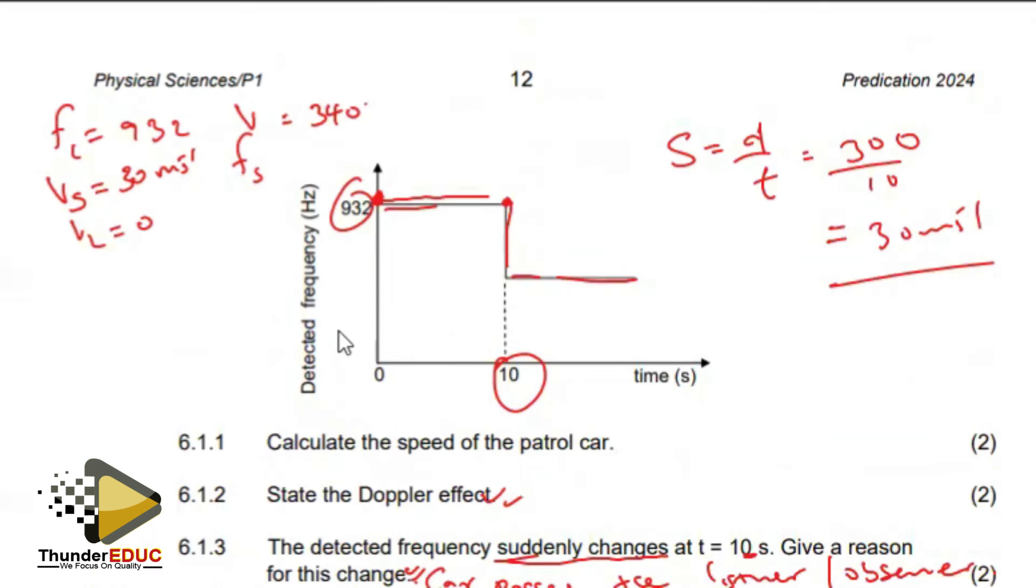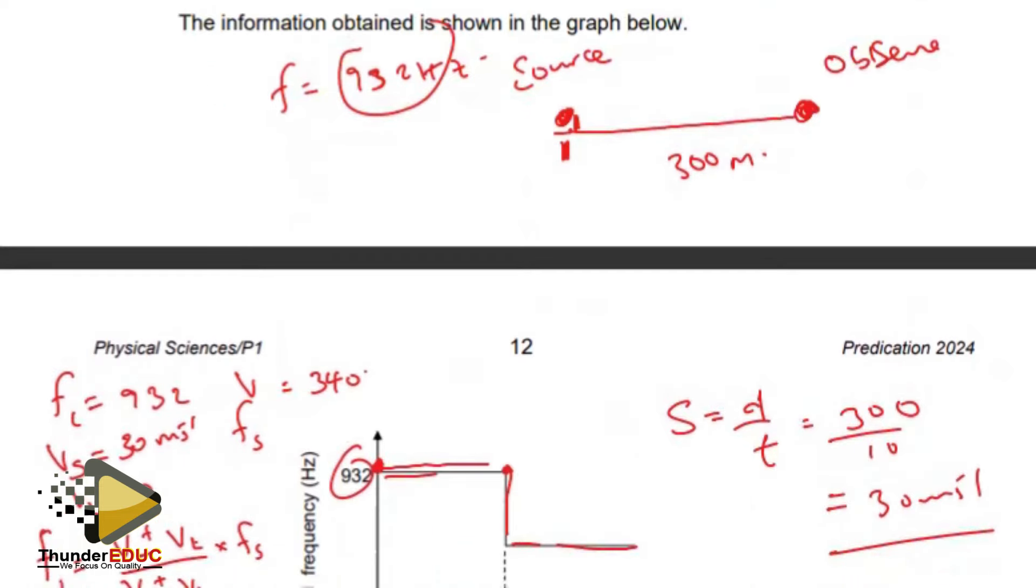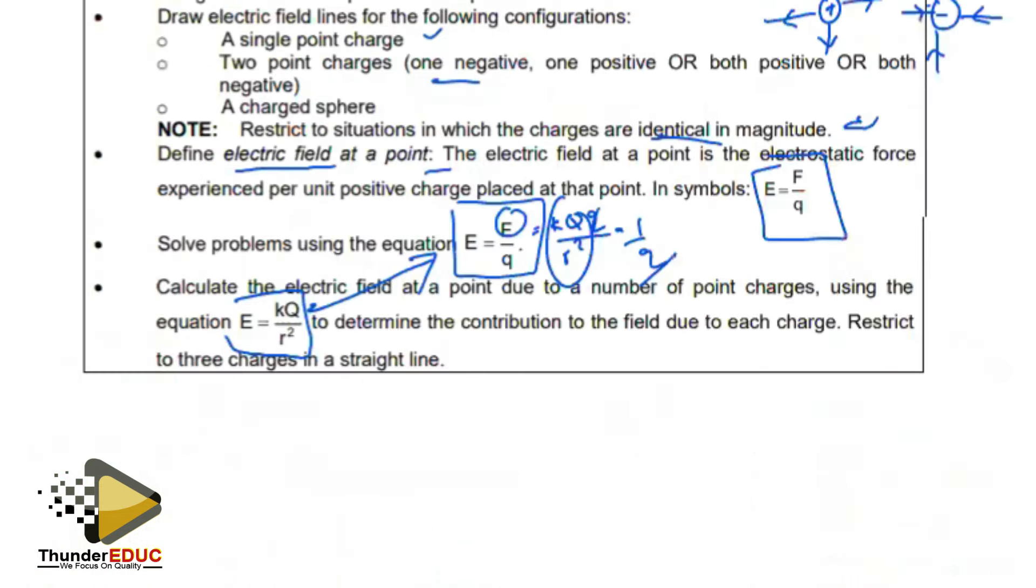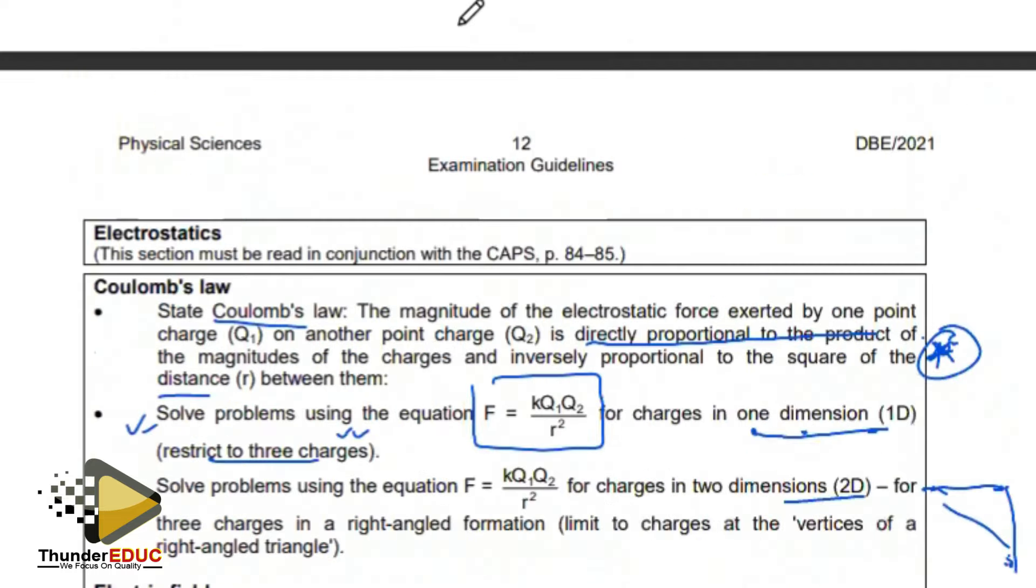So remember what we said: frequency of the listener should be v plus minus vL over v plus minus vS times fS. That's the formula. Let's just go back there and be sure. Listener on top, perfect. Then let me do the substitution.